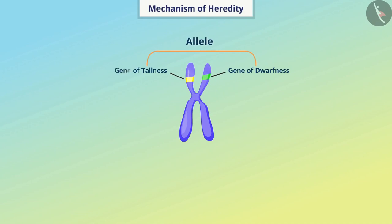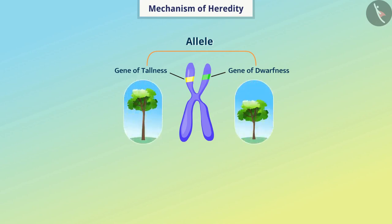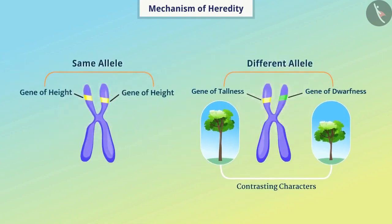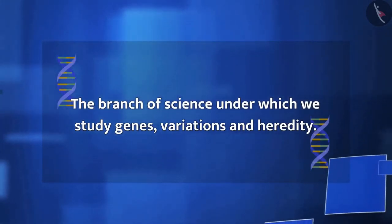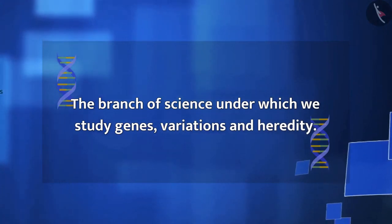Different forms of the same gene are called alleles. For example, genes for tallness and genes for dwarfness are alleles for the trait called height. To understand heredity, we represent them with letters. Tallness and dwarfness are different traits of the same gene — we call these contrasting characters. Alleles in an organism may be the same or may also be different. Organisms that have the same pair of alleles for a trait are called homozygous, and organisms which have different pairs of alleles for one trait are called heterozygous. The branch of science under which we study genes, variations, and heredity is called genetics.